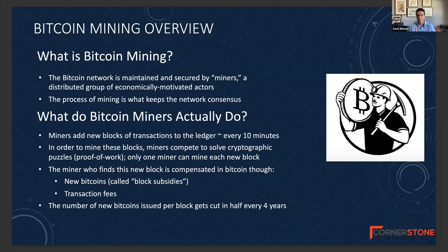Every 10 minutes, only the fastest miner — the first one to solve the cryptographic puzzle — is awarded the Bitcoin for solving it. That's how Bitcoin is issued to the marketplace. Right now, about every 10 minutes, 6.25 new Bitcoin are issued to the miner who solves that cryptographic puzzle and verifies the transactions that get added to the blockchain. They also receive some lesser amount in transaction fees.